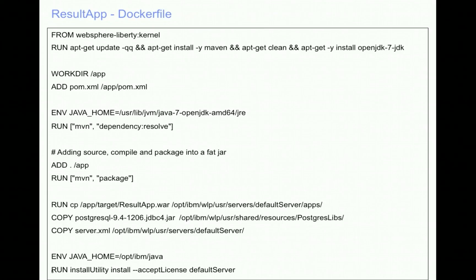The result app also runs in a WebSphere Liberty Docker container. Here you can see it is using the WebSphere Liberty kernel as the base image and the necessary features like WebSocket, JDBC, and JNDI are installed using the install utility command.